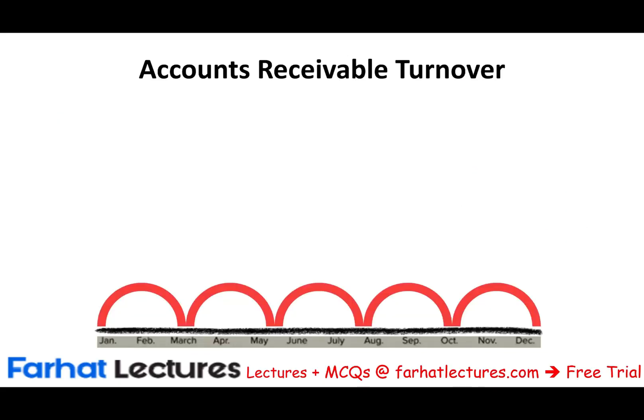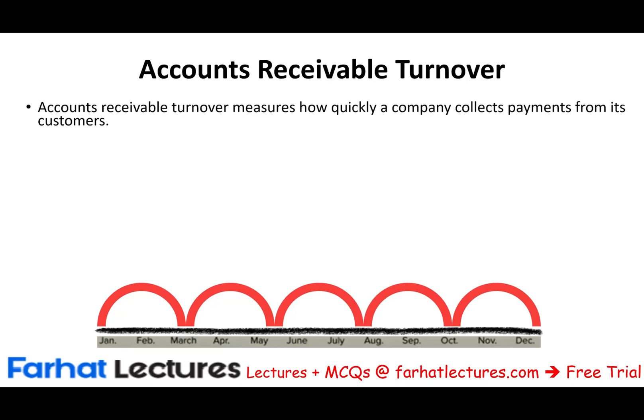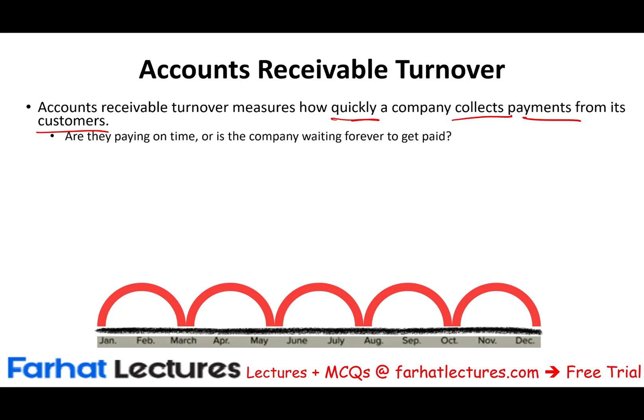Starting with accounts receivable turnover. This ratio measures how quickly a company collects payment from its customers. We make a sale, sell on account, and give the client a certain number of days — typically 30 days in the industry, though some companies provide 60 or 90 days. The ratio tells us how often the company is collecting their money.